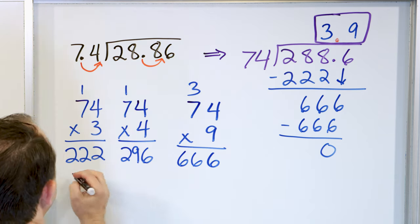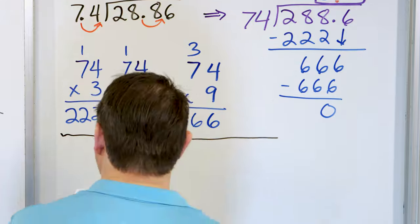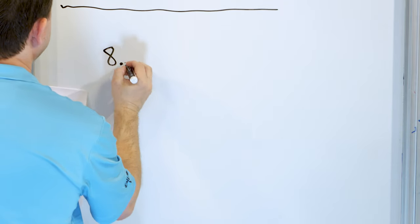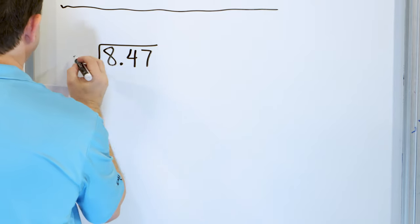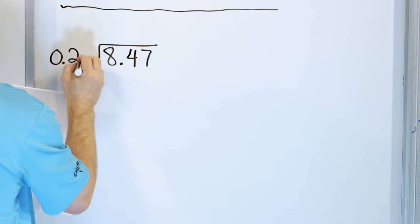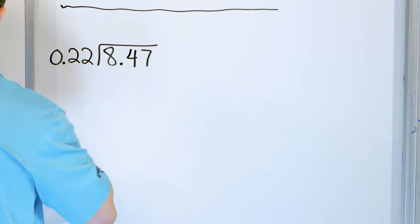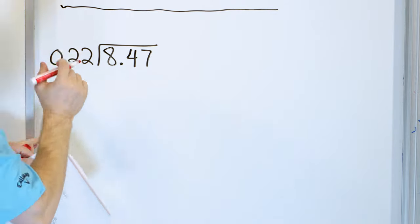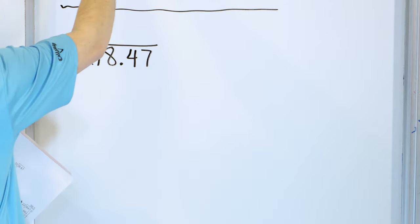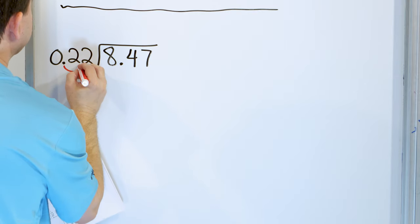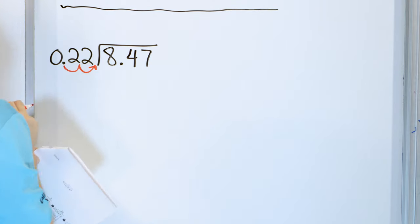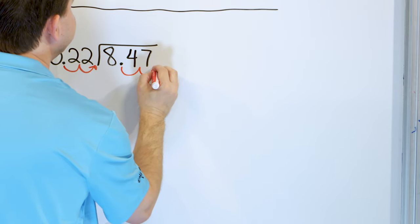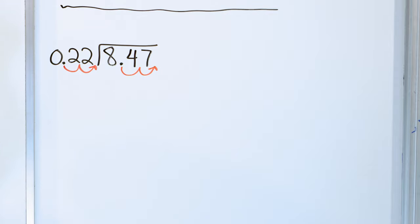Alright, making good progress. Let's take a look at problem number five. We want to divide 8.47 by 0.22. Now here we have a decimal with two digits after it. Whereas before we only had to move one position, here we actually have to move the outside decimal point two positions. And if we do it two positions on the outside, then we must move the inside decimal two positions also.